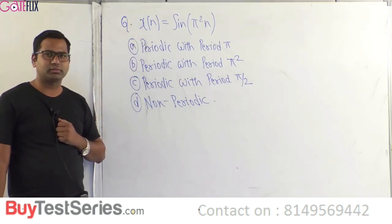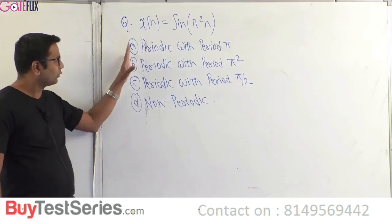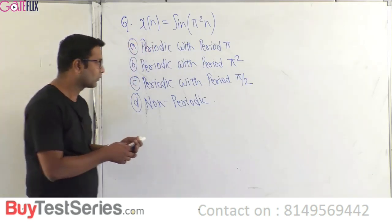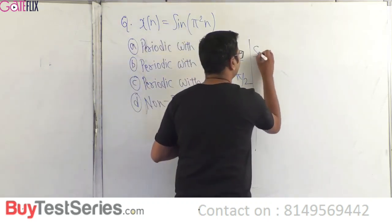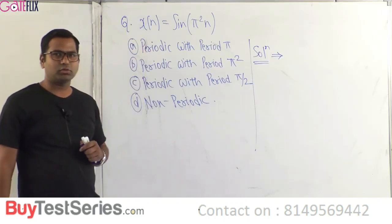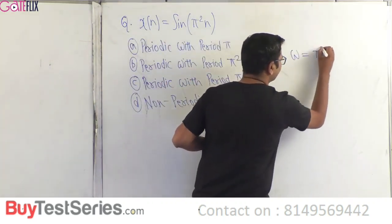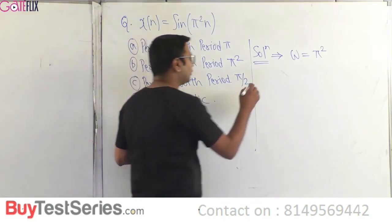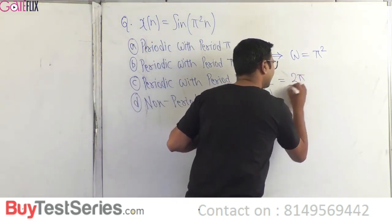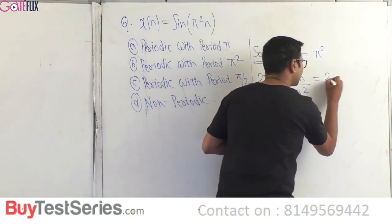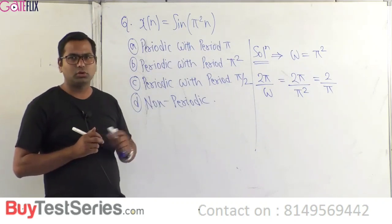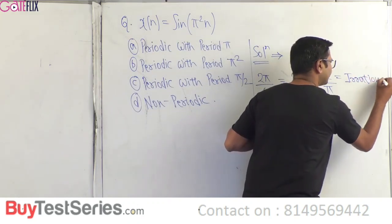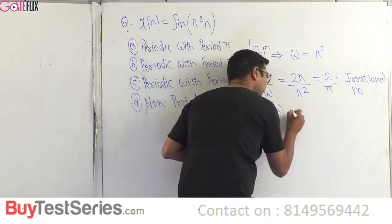In the next question, a discrete time signal x(n) is given with ω = π². To find the period of a discrete time signal, we calculate 2π/ω = 2π/π² = 2/π. Since 2/π is an irrational number, x(n) is non-periodic.